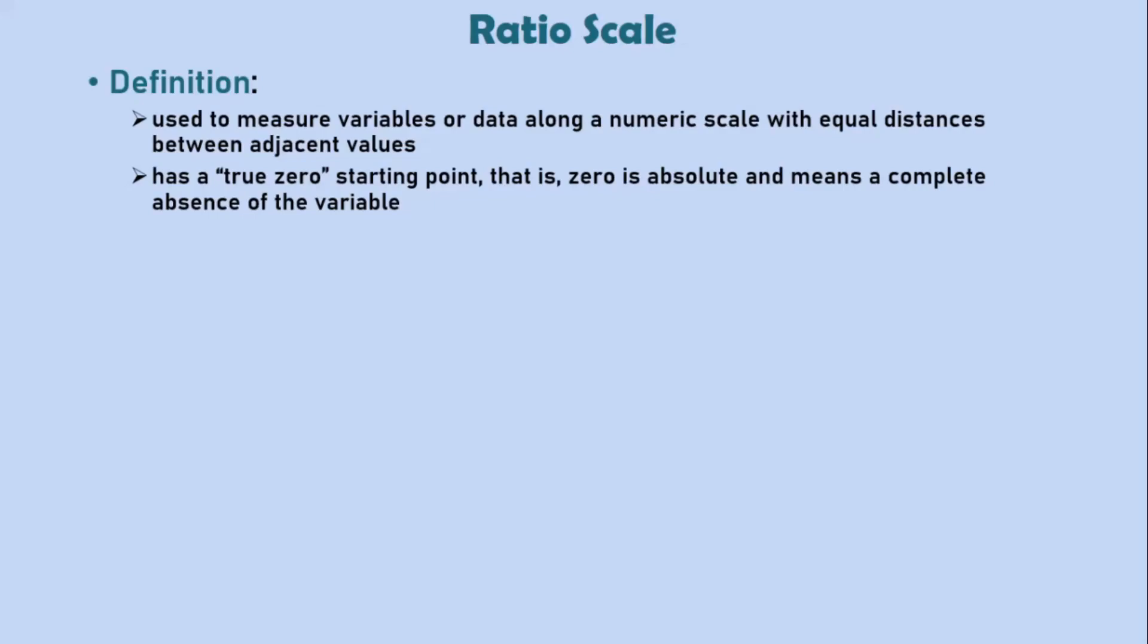Because of this, ratio scale variables cannot have negative numbers. Also note that we can actually compare values of variables on a ratio scale in that they can be multiplied or divided. Since there is a common reference point, which is zero,